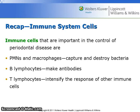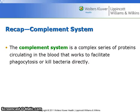A recap of the immune system: immune cells important in the control of periodontal disease are PMNs and macrophages, which capture and destroy bacteria; B lymphocytes, which make antibodies; and T lymphocytes, which intensify the response of other immune cells. The complement system is a complex series of proteins circulating in the blood that works to facilitate phagocytosis or kill the bacteria directly.